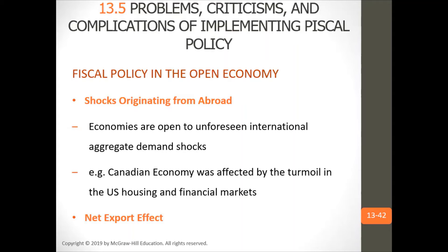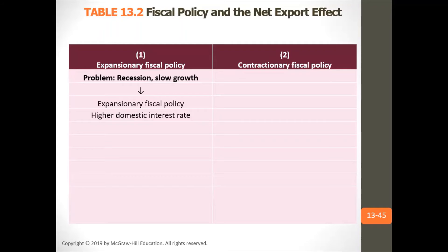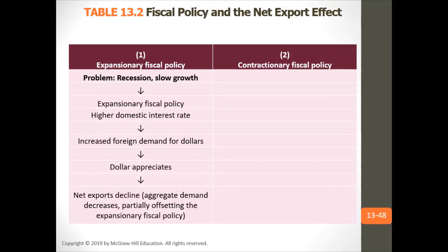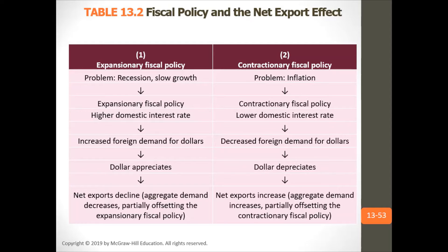In an open economy since we have trade, when the 2008 housing crisis happened in the U.S. and housing prices crashed, the Canadian economy was affected a lot because we do a lot of trade with the U.S. If the U.S. economy goes into recession, we go into recession because the U.S. is our greatest trading partner. Expansionary fiscal policy leads to higher domestic interest rates, increased foreign demand for dollars, dollar appreciation, net exports decline, and aggregate demand decreases — partially offsetting the expansion.